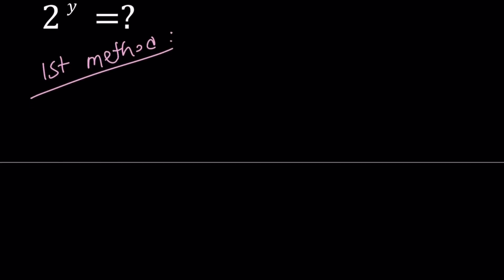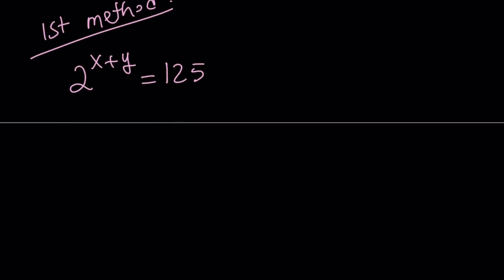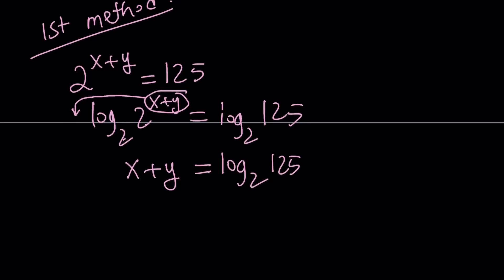So for my first method, I'm going to take these expressions and log both sides. But I want to use base 2 so I can get rid of the exponents. If you log both sides, you're going to get something like this. The log and the exponent are going to cancel out. Log 2 with base 2 is going to be 1.